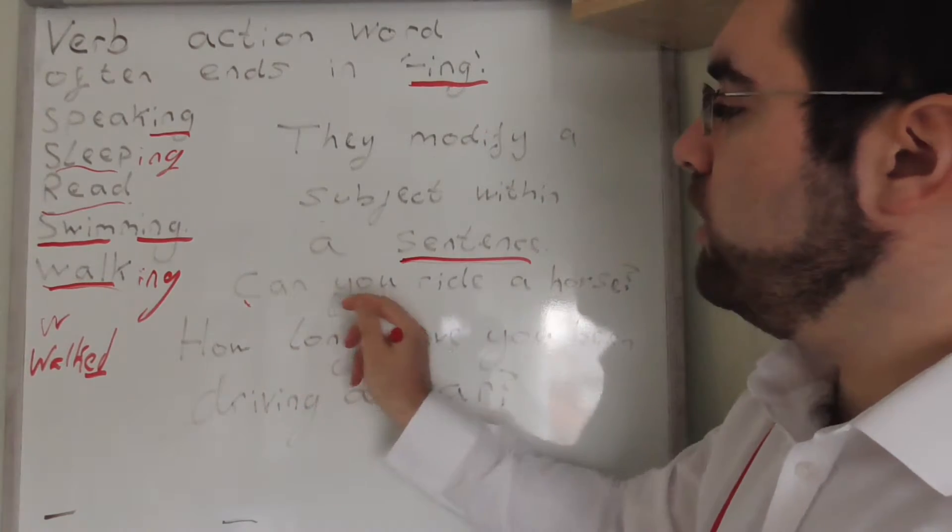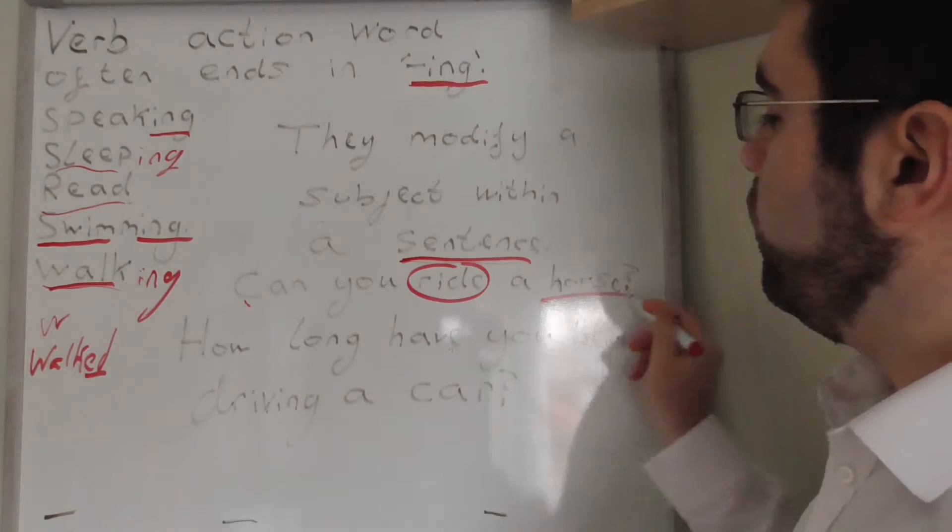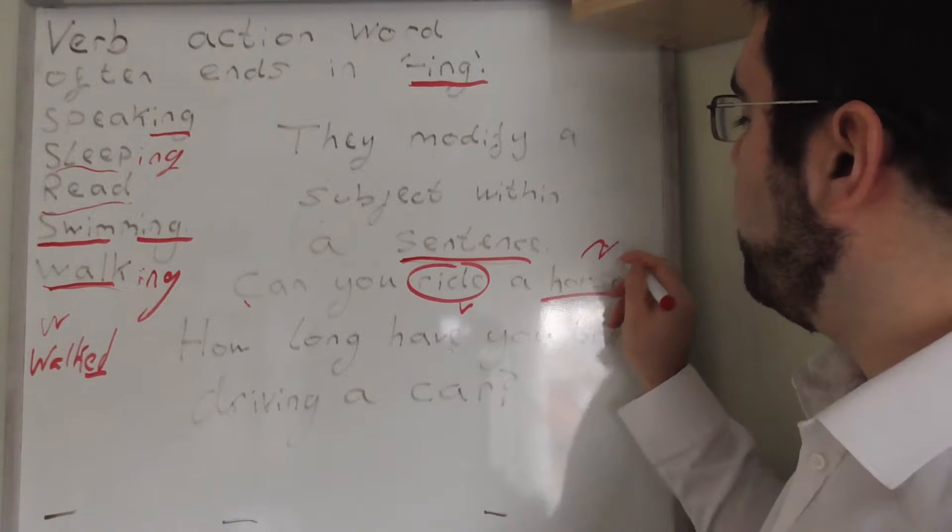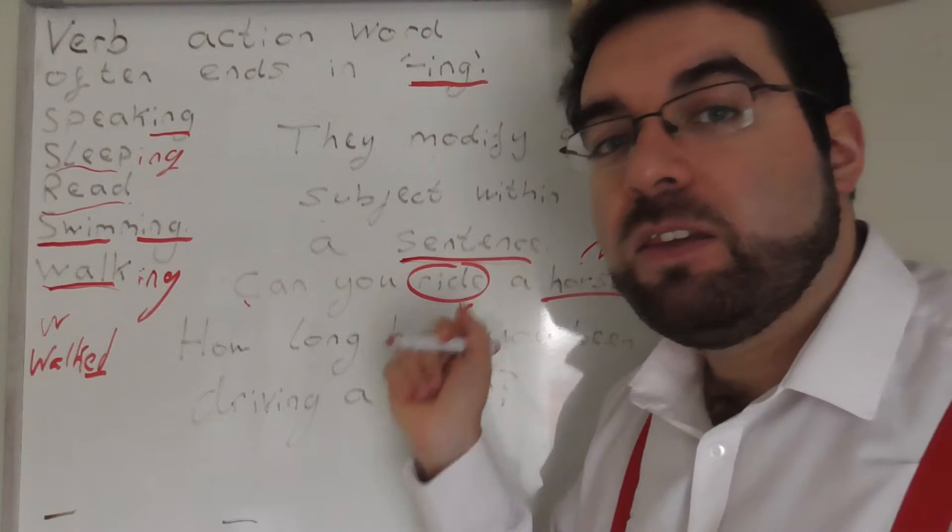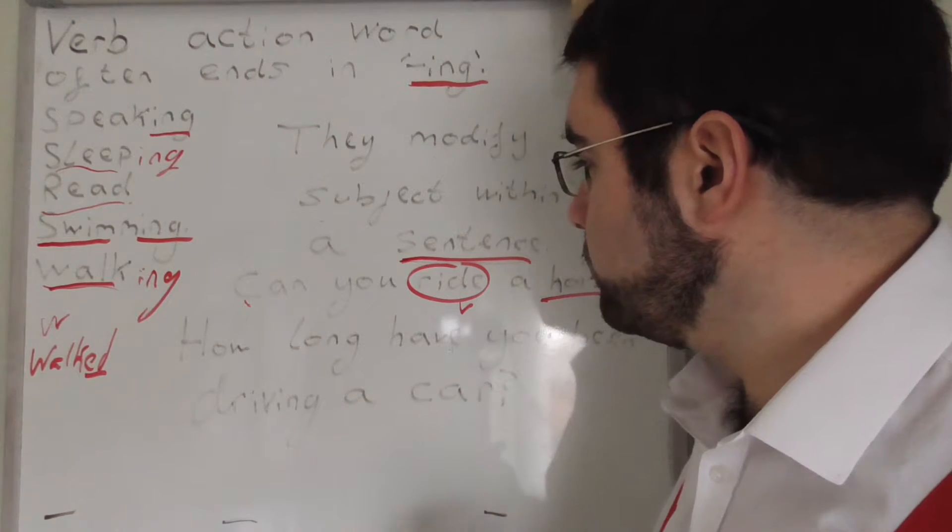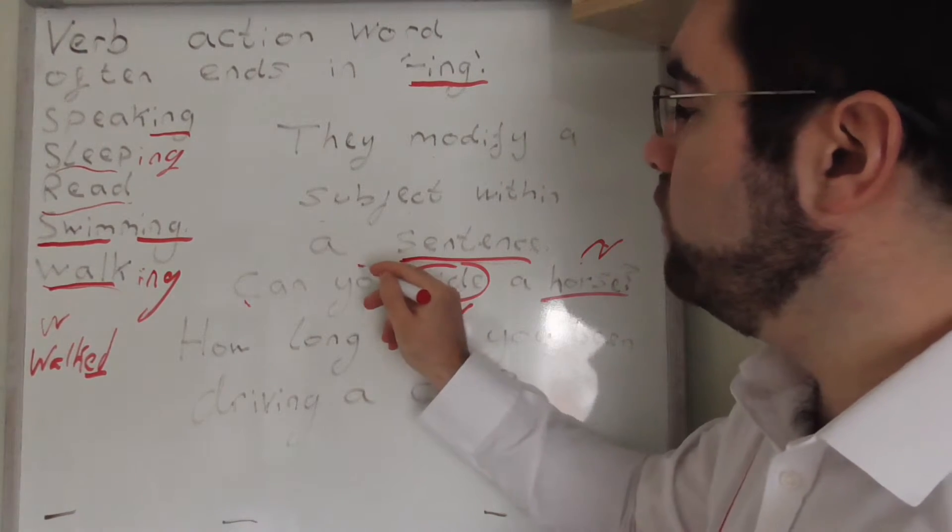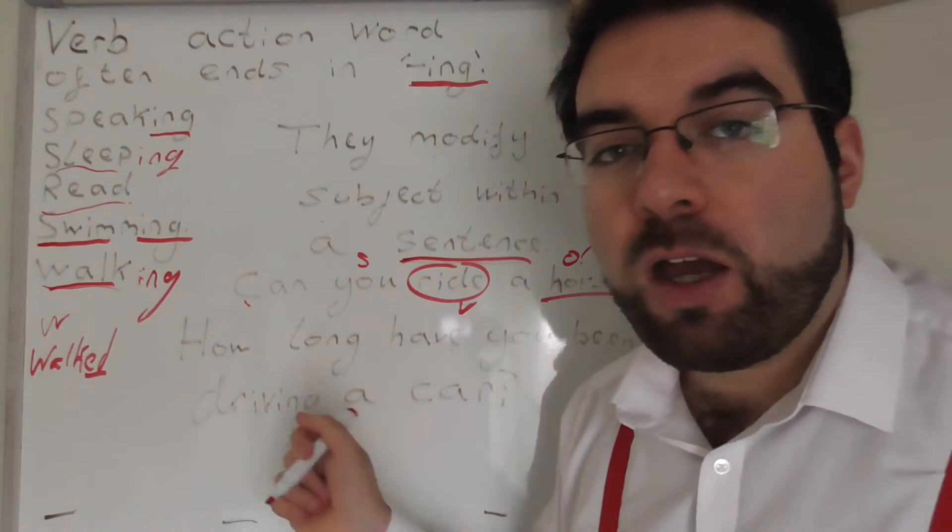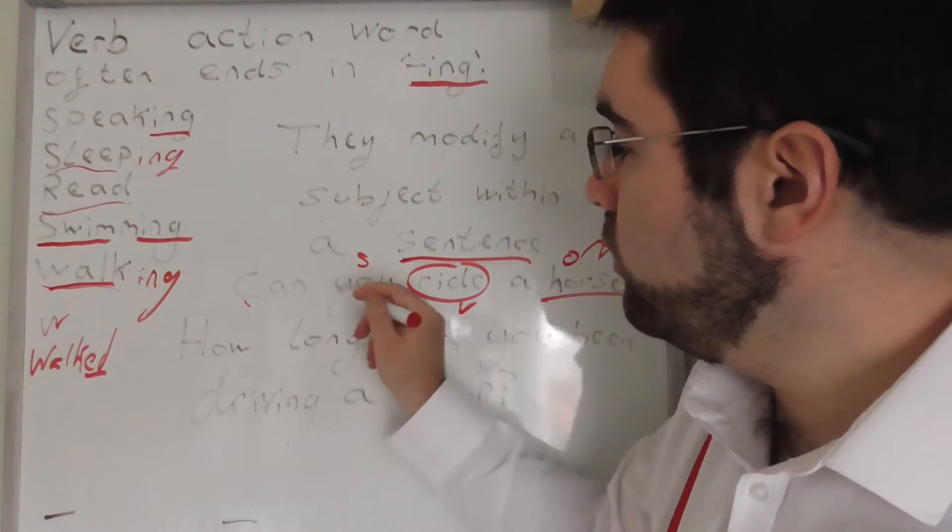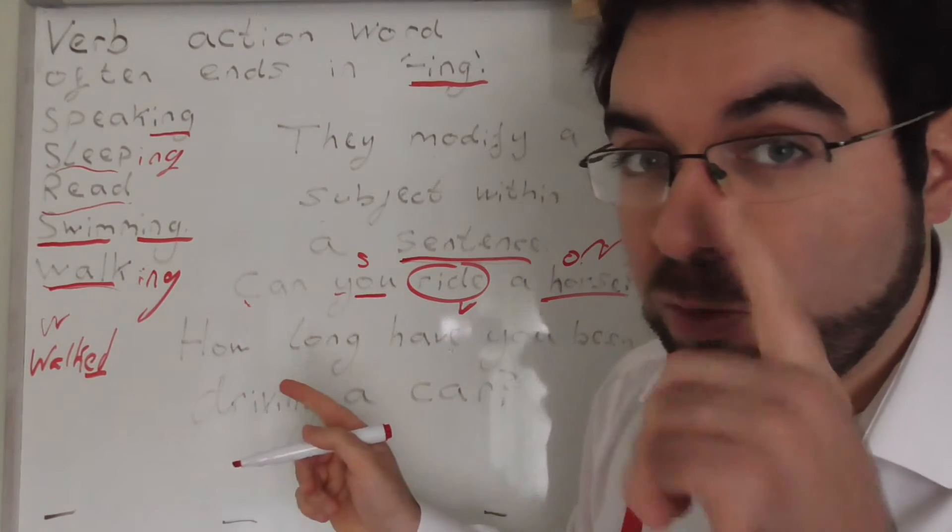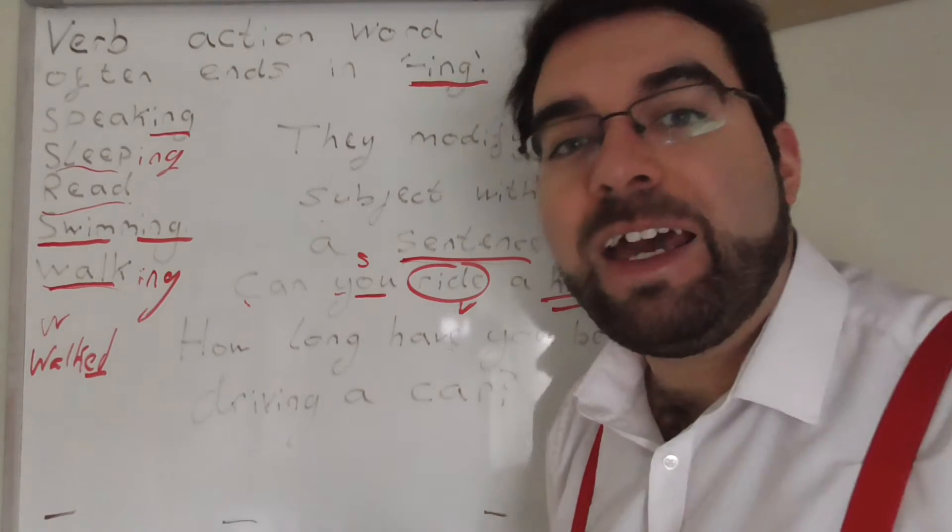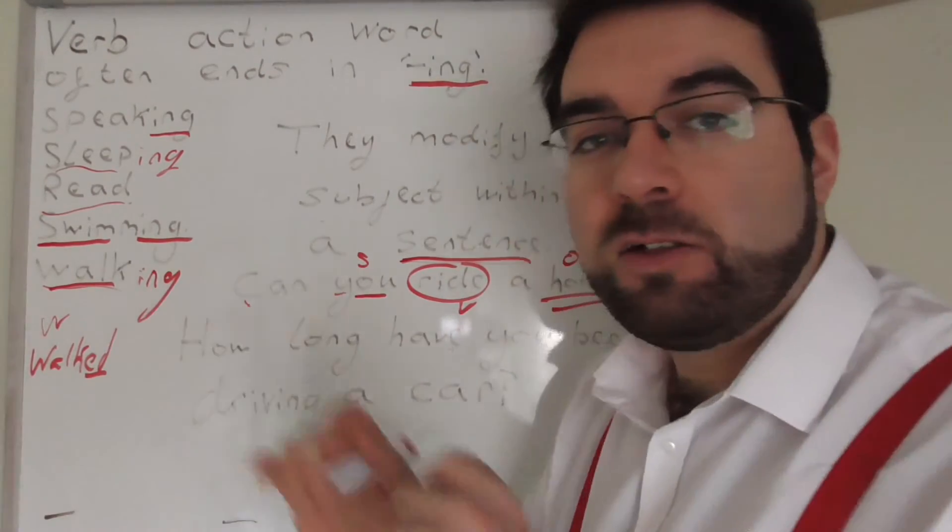So we could say can you ride a horse? Ride being the verb and horse being the noun, or in this case the object as well. Can you is the subject, horse is the object, you ride. So ride is the verb. Can you is also in a way the noun, more of a pronoun but we'll get that later. And horse being the noun. Can you ride a horse?